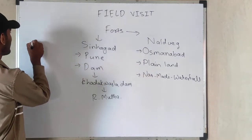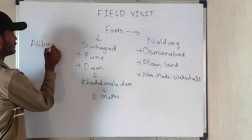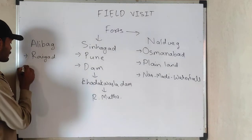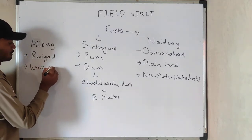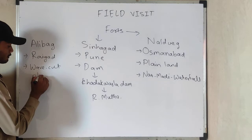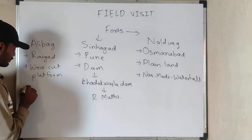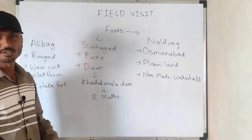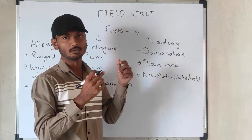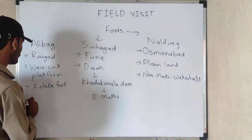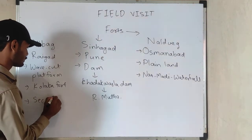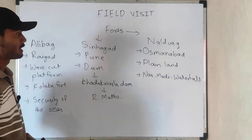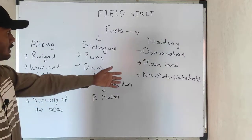The last fort is Aliwag Fort, which is located on a wave-cut platform. There is another name for this fort — Golaba Fort. Many forts were constructed during medieval times for the security of the seas, and this fort was also constructed for the same purpose. So all three forts — Naldurga, Sinagal, and Aliwag — are important and a question can be asked on any one of them.